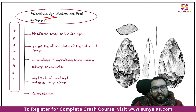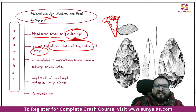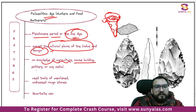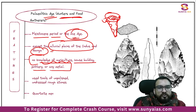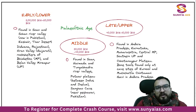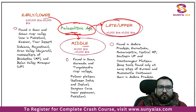Features of the Paleolithic age: it was mostly in the Pleistocene period, the Ice Age. Paleolithic culture was found everywhere in India except the alluvial plains of the Indus and Ganga, because there dense forests existed, which were cleared only after the arrival of the Aryans. There was no knowledge of agriculture, house building, pottery, or any metal — they were hunters and gatherers living in rock shelters using unpolished and undressed stone tools.